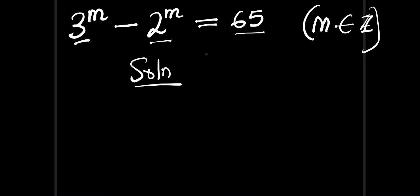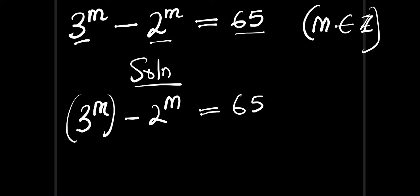So we have 3 to the power of m minus 2 to the power of m, and this is equal to 65. We can write this as 3 to the power of m, all to the power of 1, and 2 to the power of m, all to the power of 1. The next thing we are going to do is replace this 1 by writing 2 divided by 2, which equals 1.